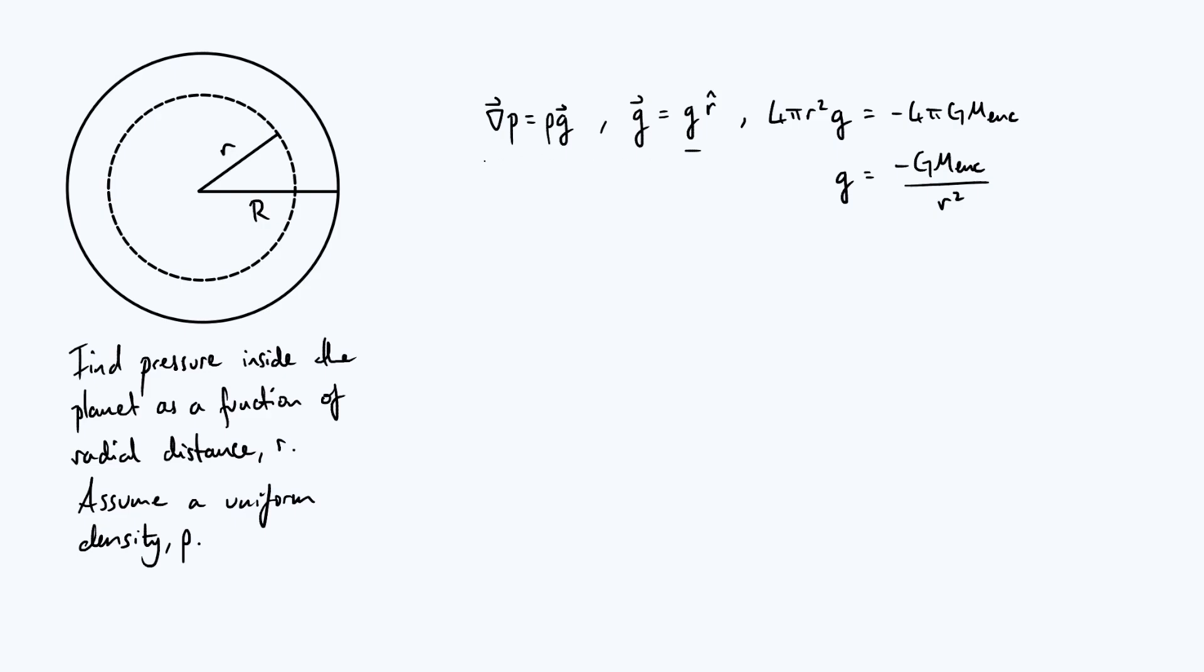So now let's combine that with our original hydrostatic equilibrium condition. First of all, how are we going to deal with this grad p thing? Well, by symmetry note that p doesn't depend on θ or φ in spherical coordinates, it only depends on the radial coordinate r, and therefore grad p can just be written as dp/dr multiplied by the r̂ vector.